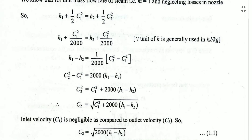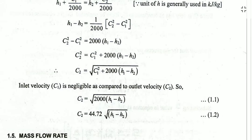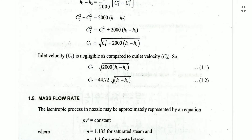After substitution, we get C2 = √(C1² + 2000(H1 − H2)). In a steam nozzle, the inlet velocity C1 is very small compared to the outlet velocity, so we can neglect C1. The formula simplifies to C2 = √(2000(H1 − H2)), and since √2000 = 44.72, the exit velocity formula is C2 = 44.72√(H1 − H2).